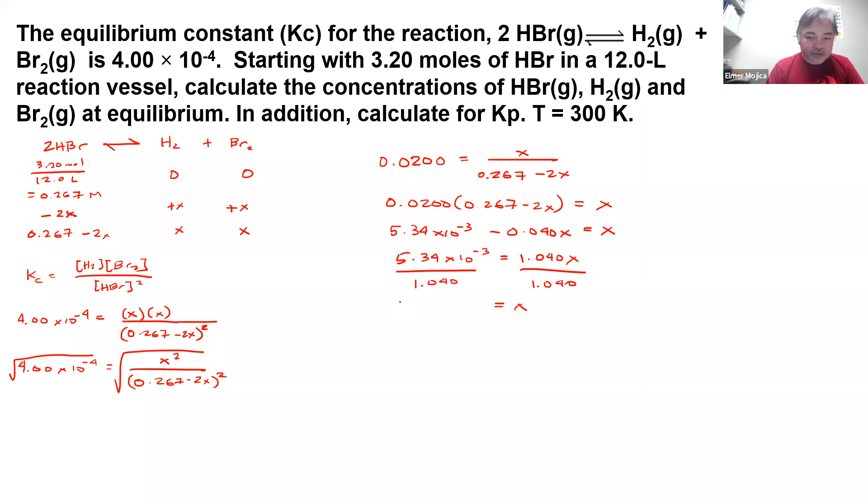So x now equals 5.13 times 10^-3. So we could say this is the equilibrium concentration of H2 and Br2 because they are what we call x.